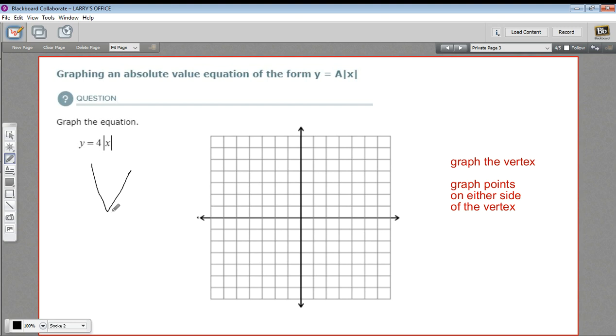And that V is going to come to a point, and that point we call the vertex. That's the first thing you want to graph when you're graphing an absolute value equation - this is the vertex.